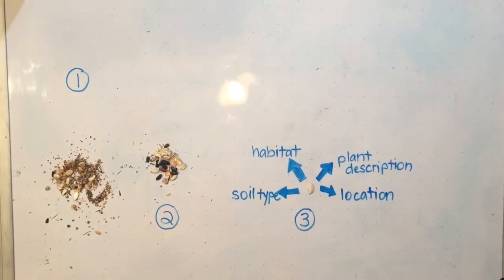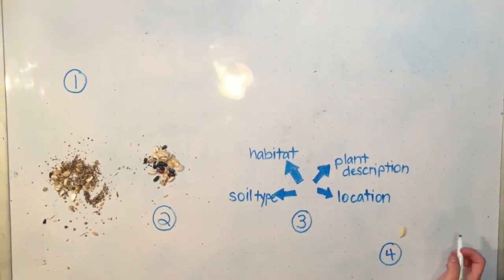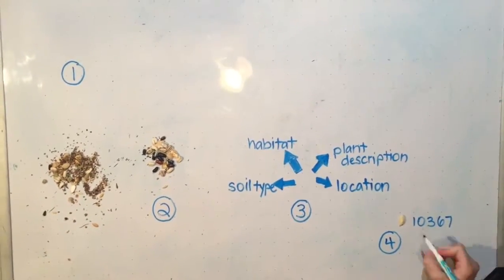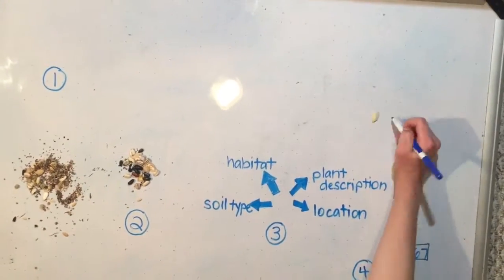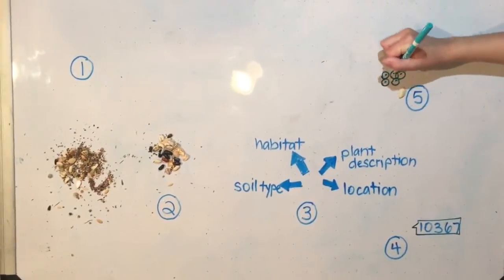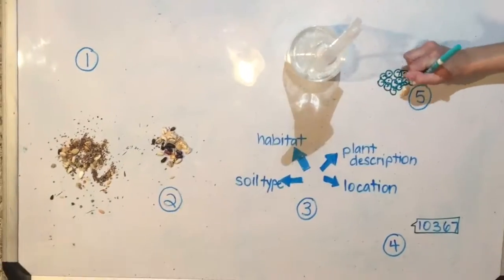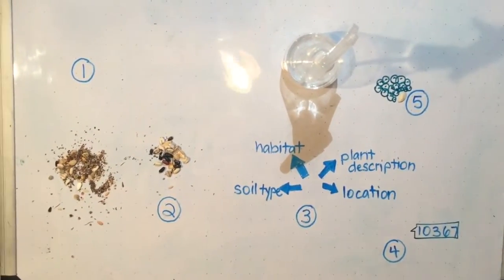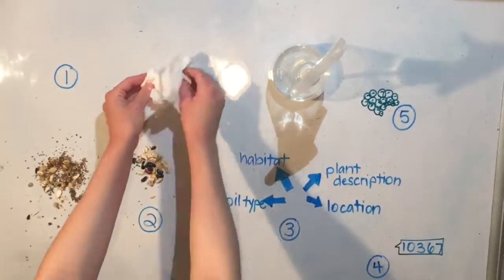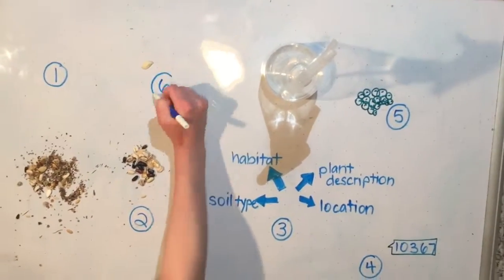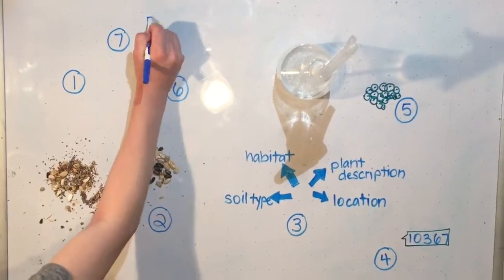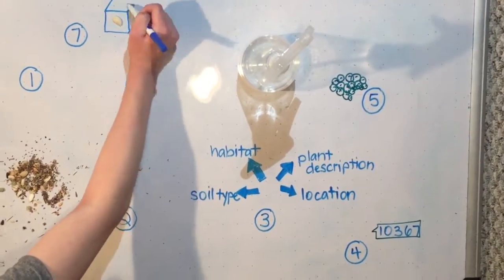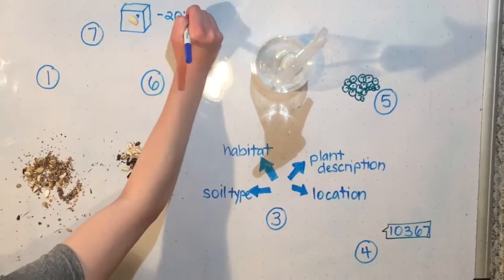This way, they can be as specific as possible with replanting conditions in the local population. Each seed sample is assigned a unique number. For example, this little guy is 103-67. To ensure the highest quality, collectors clean each sample by being shaved through a sieve or having a machine blow on them. They are then dried to reduce moisture content and stored at a minimum of minus 20 degrees Celsius in airtight containers.